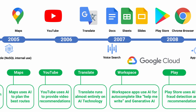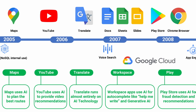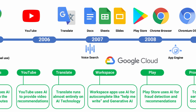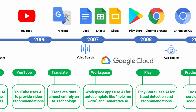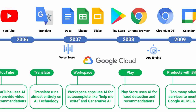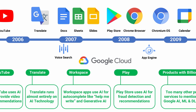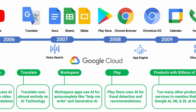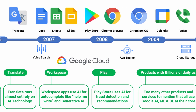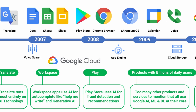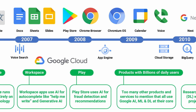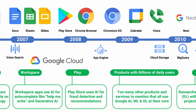Google Translate runs almost entirely on AI technology and is one of the poster children for what you can do with AI, machine learning and translation. Workspace apps use AI for auto-complete features like Help Me Write and other generative AI tools.